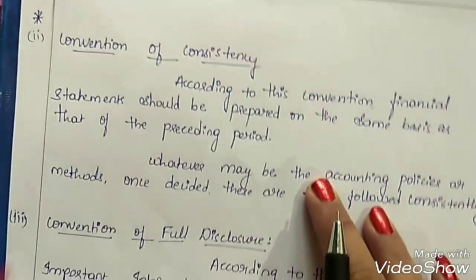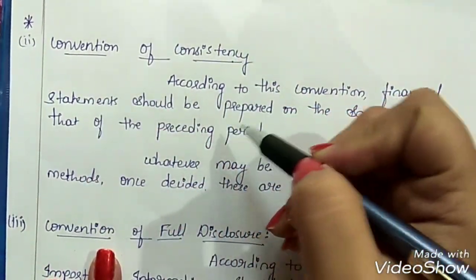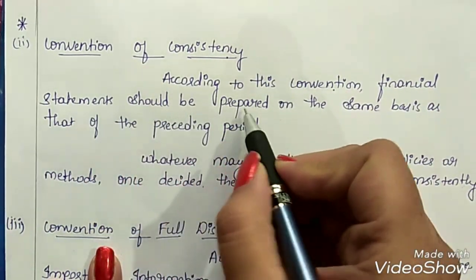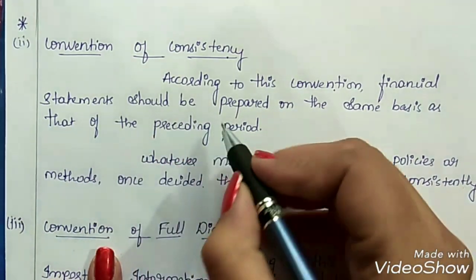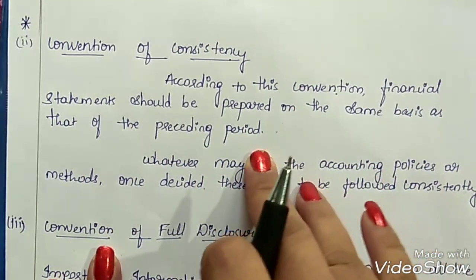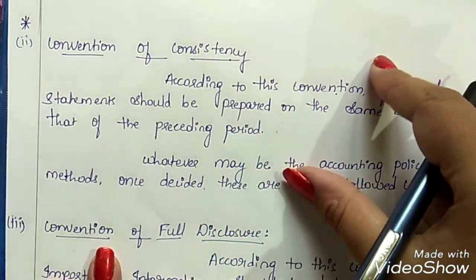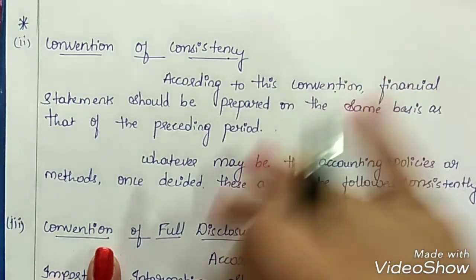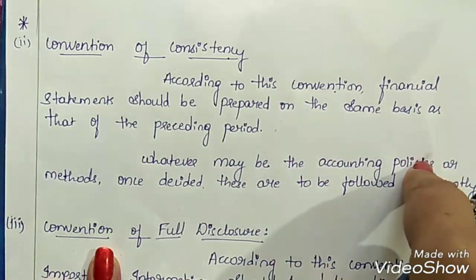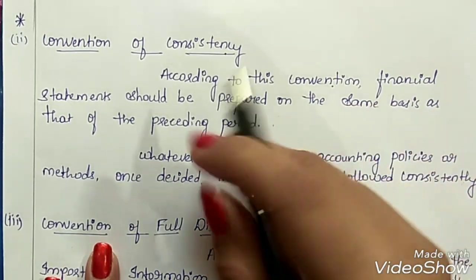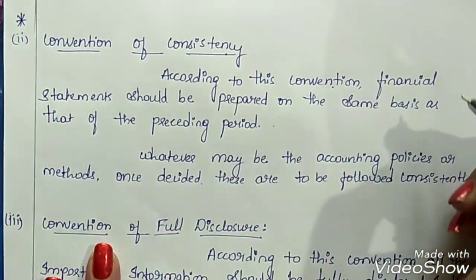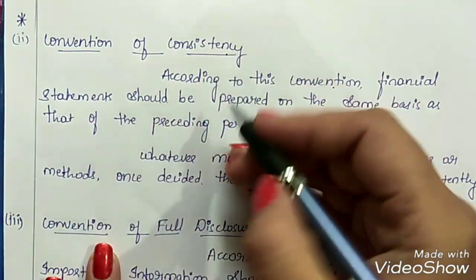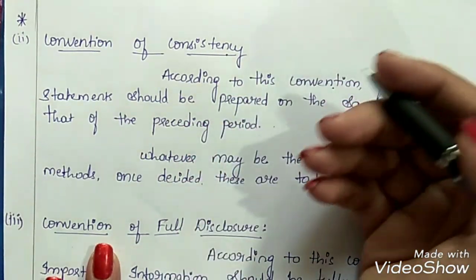The next convention is the convention of consistency. According to this convention, financial statements should be prepared on the same basis as that of the preceding period. Accounting financial statements of a business concern are prepared for different accounting periods, and the accounting period is generally of 12 months.